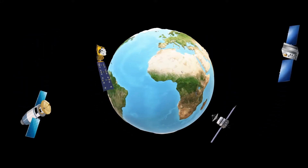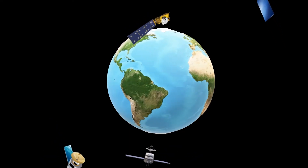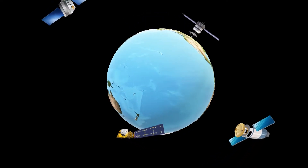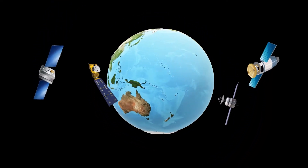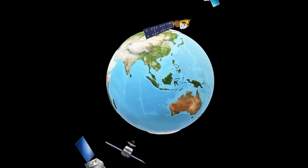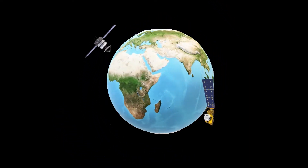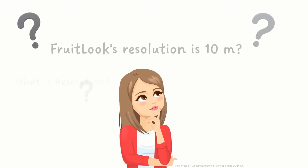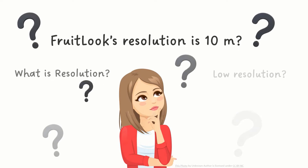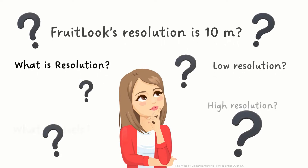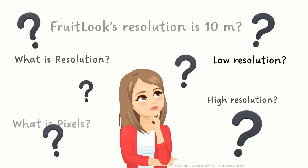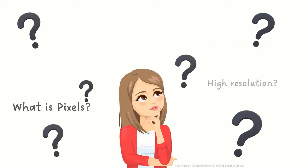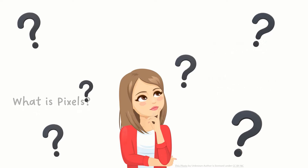Satellites with sensors of different resolutions have been observing and collecting data on the Earth for many years. The data you see in Frootlook is in fact collected by the multispectral and thermal satellites Sentinel-2 and Landsat-9, which provides an image with a resolution of 10 meters. In this second part of our series on remote sensing, we will answer questions about resolution and pixels.